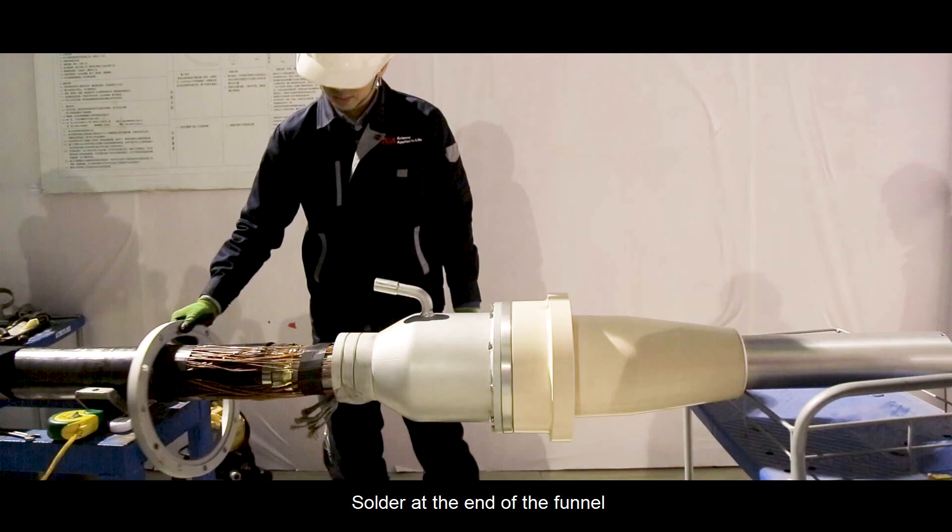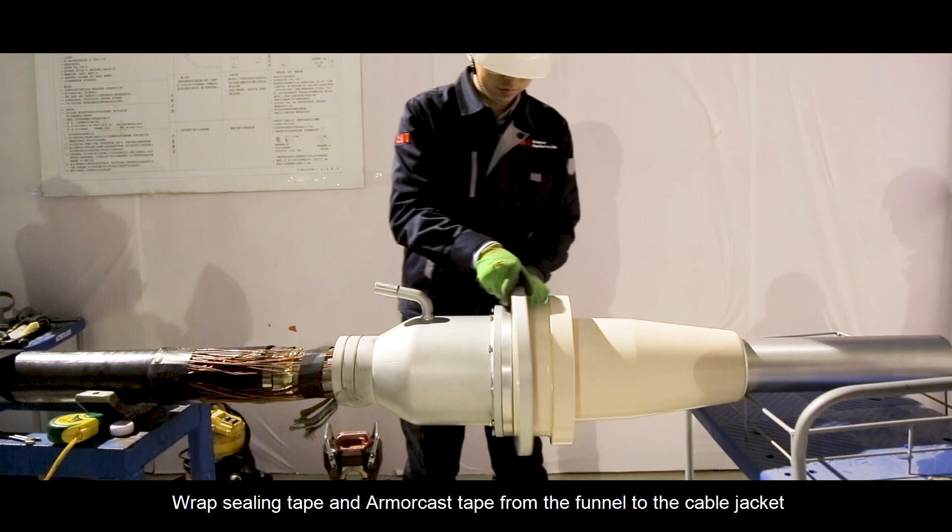Solder at the end of the funnel. Wrap sealing tape and armor cast tape from the funnel to the cable jacket. Shrink the heat shrink tube to cover all of them.